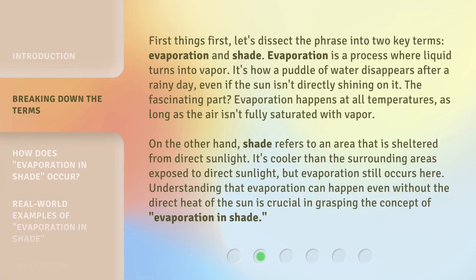First, let's dissect the phrase into two key terms: evaporation and shade. Evaporation is a process where liquid turns into vapor — it's how a puddle of water disappears after a rainy day, even if the sun isn't directly shining on it. Evaporation happens at all temperatures, as long as the air isn't fully saturated with vapor. Shade, on the other hand, refers to an area sheltered from direct sunlight. It's cooler than surrounding areas, but evaporation still occurs there.